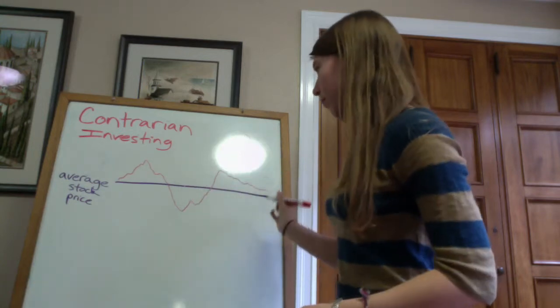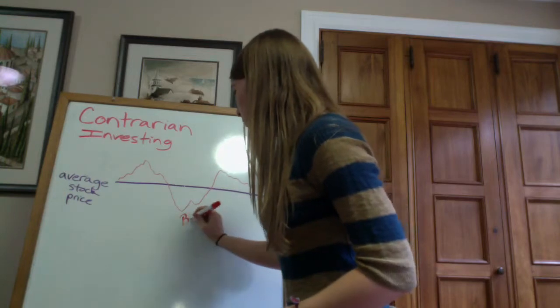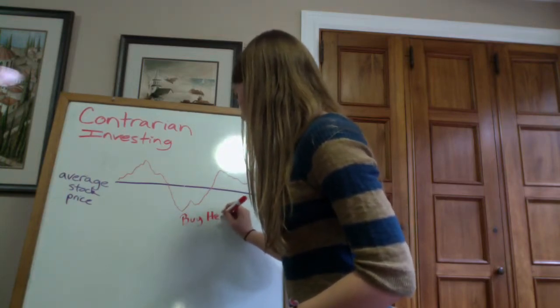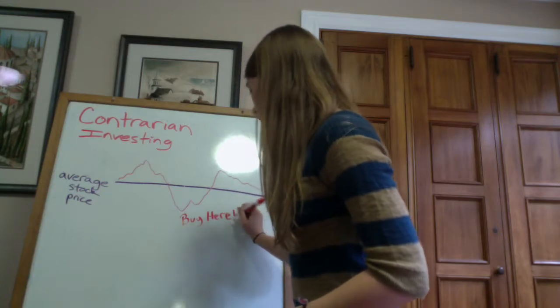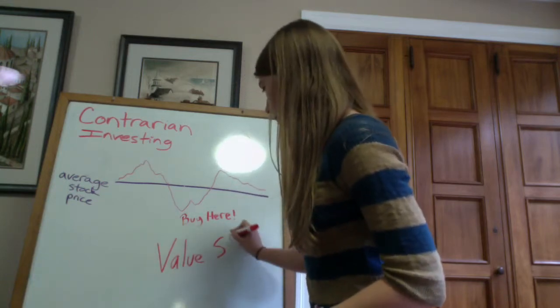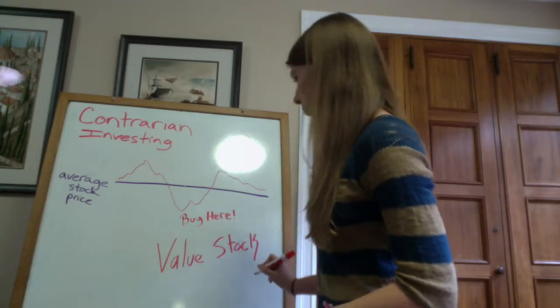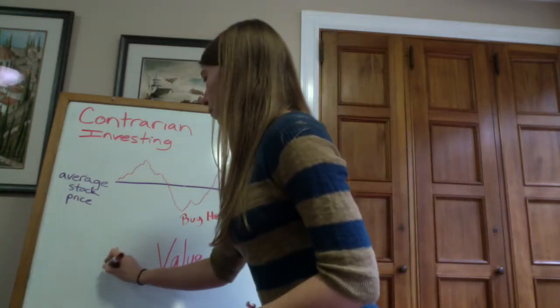It operates under the premise that stock prices are temporarily low and can be expected to revert back to their average. Buying stocks that have lost a lot of value can end up earning an abnormal return. That is, the return that is above the normal required return. The stocks purchased under this strategy are losers in the market, sometimes referred to as value stocks.